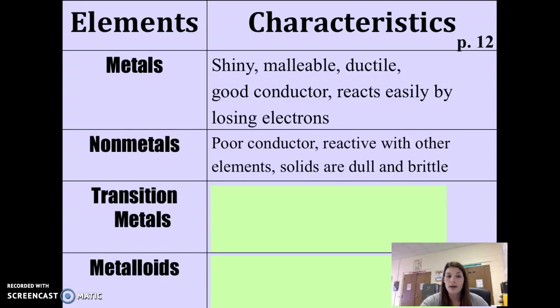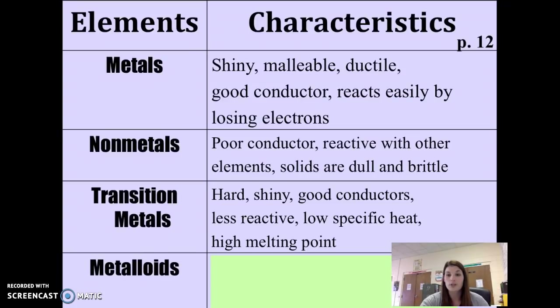The transition metals are a special section of the metals. They are found to the left of the staircase. They have some special properties, though. These are specifically in groups 3 through 12, are called the transition metals, the middle of the periodic table. In general, they are hard. They're shiny. They are good conductors. They are less reactive than other metals. They have a low specific heat compared to water, and they have a high melting point, which is good because they're used in like pots and pans, and you don't want your pots and pans to melt on the stove.